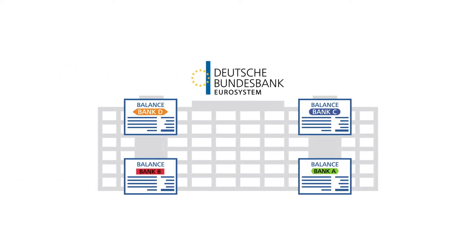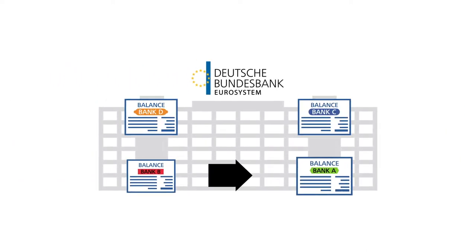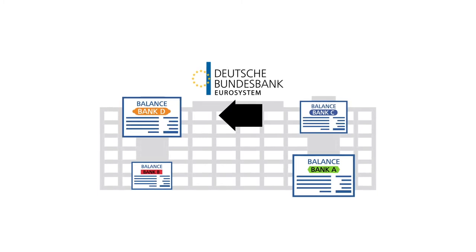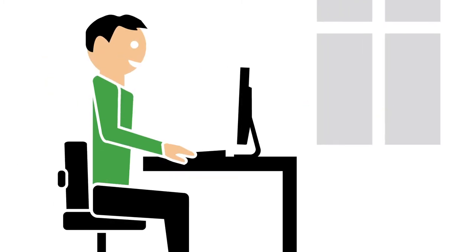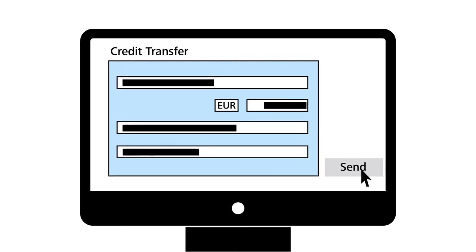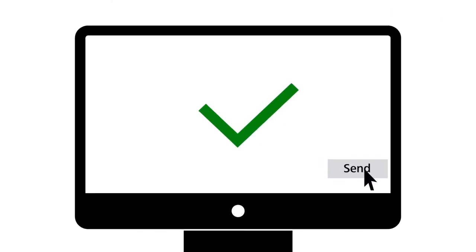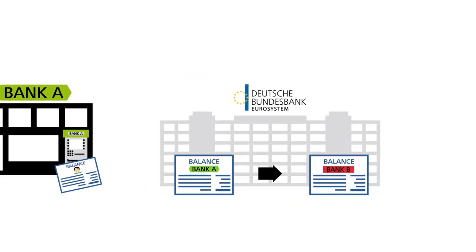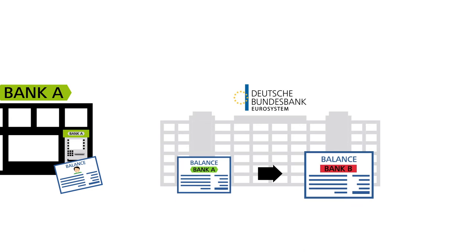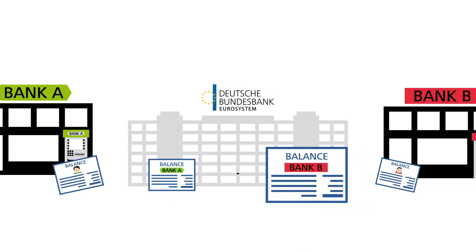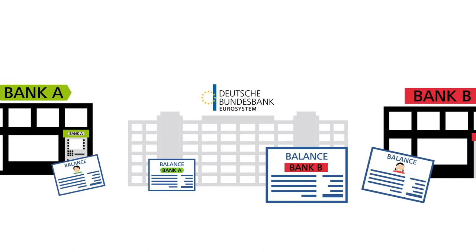Third, commercial banks need central bank reserves for interbank transactions — that is to say, for cashless payments. If Mr. Meyer, a customer of Bank A, transfers money to Ms. Mueller, a customer of Bank B, his bank balance at Bank A goes down. At the central bank, the amount is transferred from Bank A's account to Bank B's account. Bank B then credits the amount to Ms. Mueller's account.